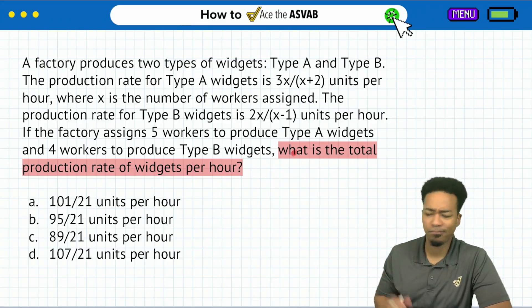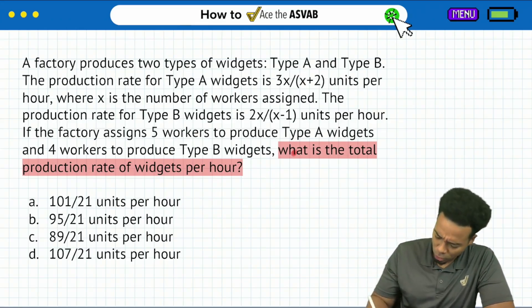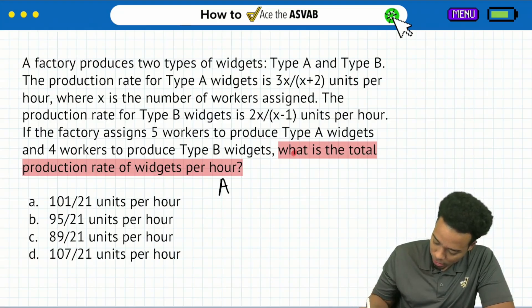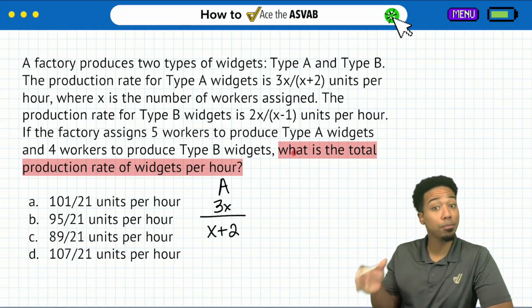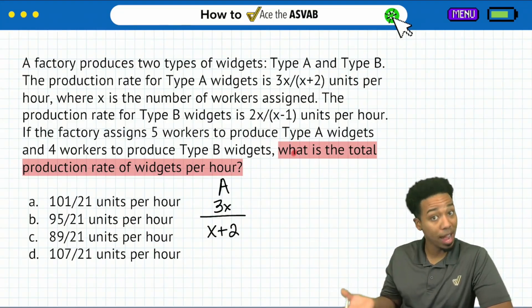So notice I'm not going to sit here and read the whole thing. I just see that it's an algebraic expression. Let's write that thing down. So here we have type A widgets, and that's going to be 3x over x plus 2.